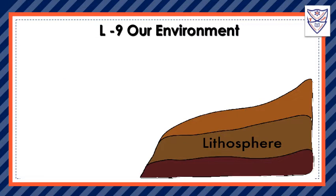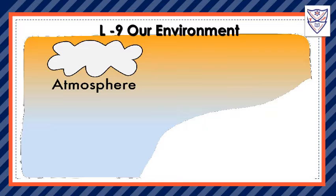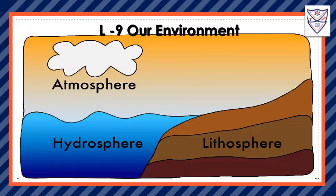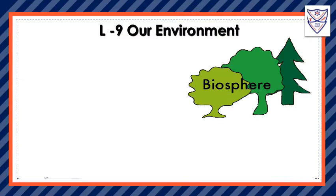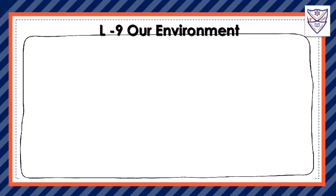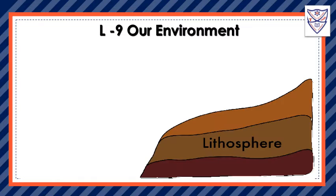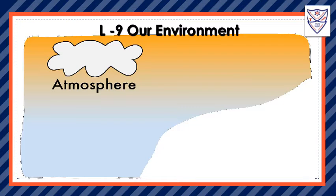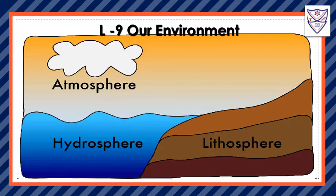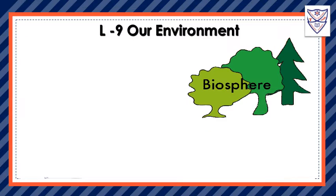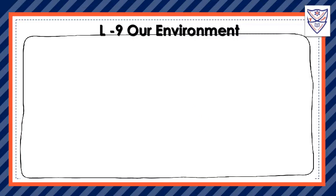Our Environment. All the physical surroundings on earth are called environment. The environment includes everything living and everything non-living. The non-living part of the environment has three main parts: the atmosphere, the hydrosphere, and the lithosphere. The part of the environment where life happens is called the biosphere.